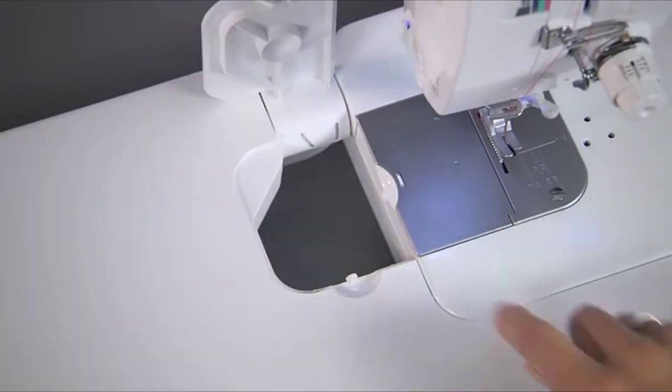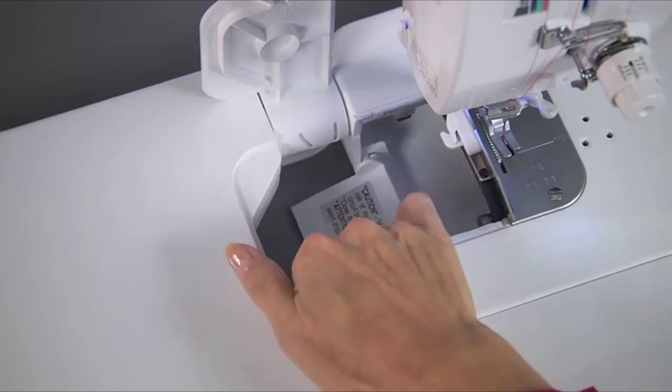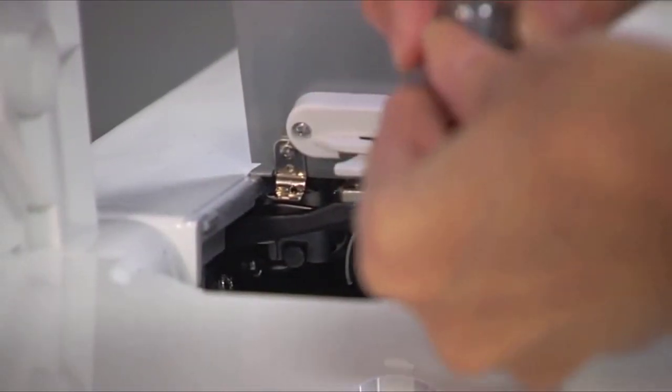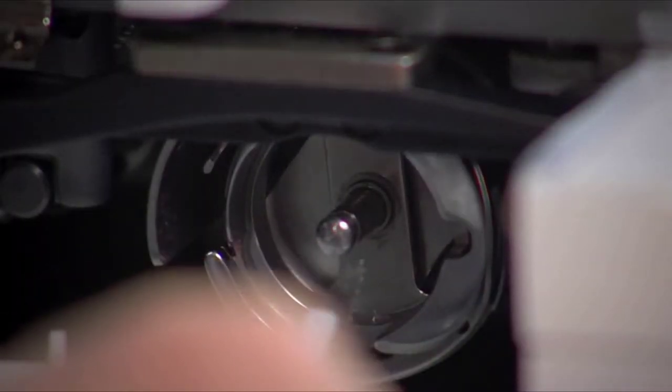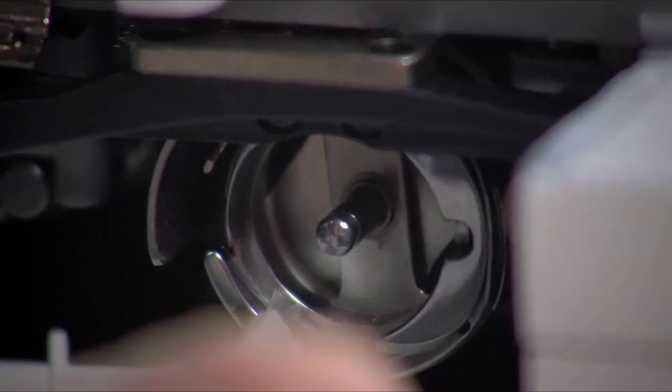I can reach right in and access the bobbin through the side cover. The PQ1500SL uses a metal bobbin both for durability and because it holds more thread. You wouldn't want a small bobbin on a machine that moves this fast now, would you? The location of this cover makes care and maintenance around the bobbin case a breeze.